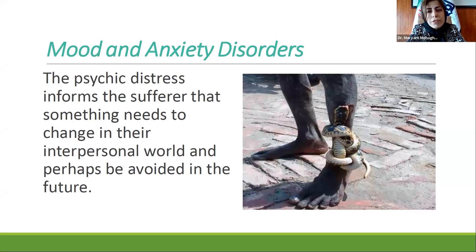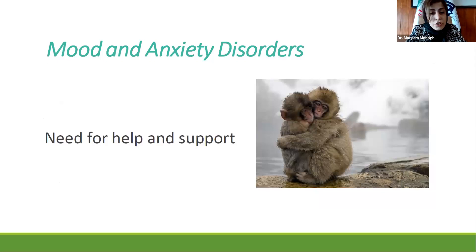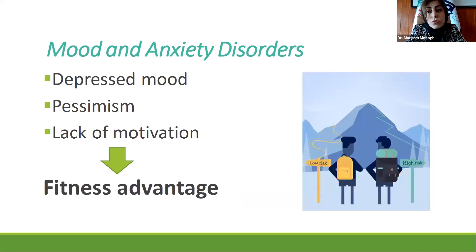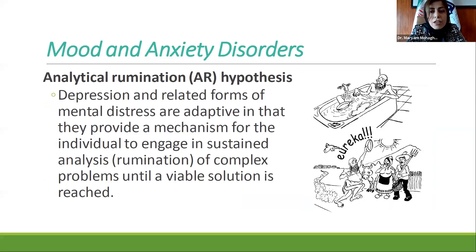Psychic distress informs the sufferer that something needs to change and perhaps be avoided in the future. For example, if you don't feel psychic distress, you won't avoid a venomous snake that can kill you. Psychic distress can also inform others that you need help and support, and it helps the sufferer to disengage from commitment to unreachable goals. A depressed mood, pessimism, and lack of motivation may provide a fitness advantage by inhibiting dangerous behaviors. Another point is analytical rumination — psychic distress provides a mechanism to engage in sustained analysis of complex problems until a solution is reached.